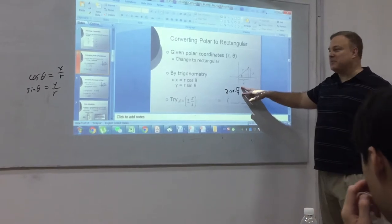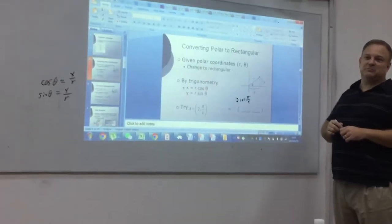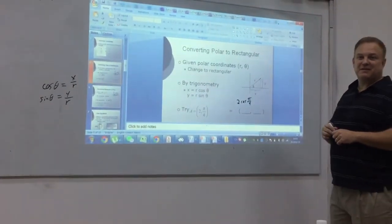Now, if you take square root of two over two, and you multiply it by two, what do you get? Square root of two.